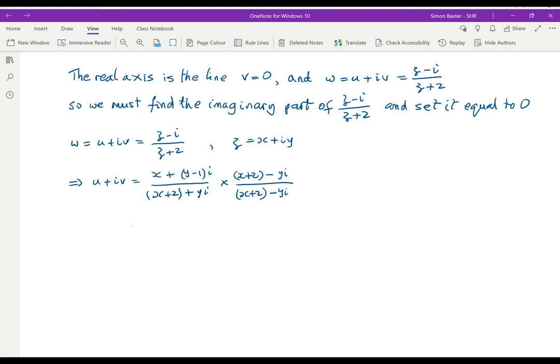Working that out, we get x times x plus 2 on the top line. Then I have x times minus yi. Then I have y minus 1 i times x plus 2. And then I have y minus 1 i times minus yi, minus i squared is plus y minus 1 times y. All over, this is just a plus b times a minus b. That is x plus 2 squared minus i squared is plus i squared y squared. This is u plus iv. And what we want now is to put v equal to 0.